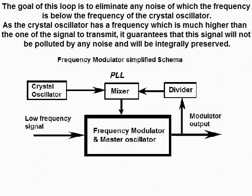The goal of this loop is to eliminate any noise whose frequency is below the frequency of the crystal oscillator. As the crystal oscillator has a frequency much higher than the signal to transmit, it guarantees that the signal will not be polluted by any noise and will be integrally preserved.